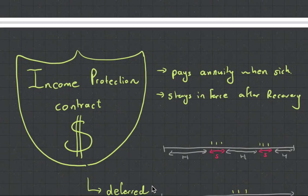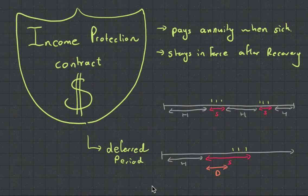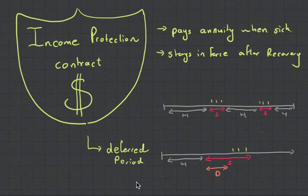The first thing is this thing known as income protection and this is an annuity that pays out not when someone dies which is what we've been dealing with but rather when someone becomes sick and so sickness is this new state that we introduce. We're also going to introduce a state known as retirement and withdrawal and we can add up as many of these other states and these are known as multiple decrements.